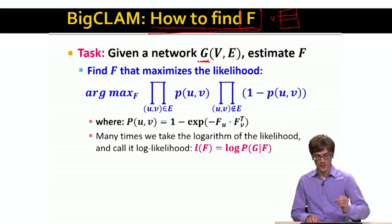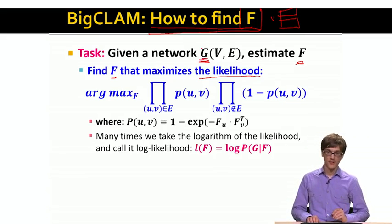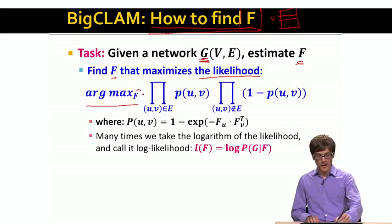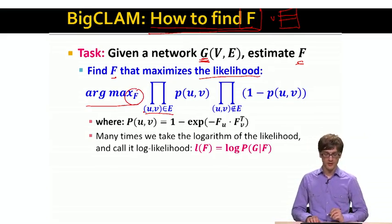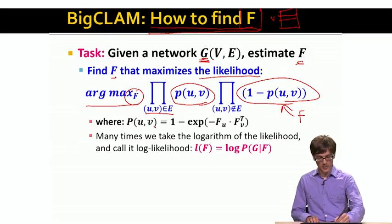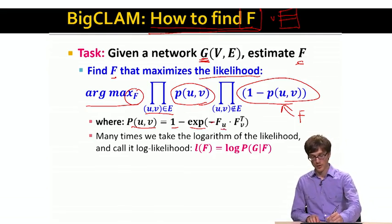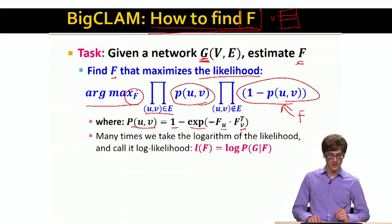Here is our task: given a network G, we want to estimate F, and we want to find F in such a way that it maximizes the likelihood. It maximizes the probability that F generated our graph G. We want to find F that maximizes the probability of the graph, where these edge probabilities are computed based on our matrix F. The probability of an edge is simply 1 minus e raised to the power of minus, given two rows, one for node u and one for node v in our matrix.